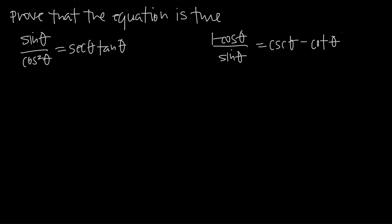In this video, we've been asked to prove that these trigonometric equations are true, and they look pretty messy right now because they are. The point of this is to show that the left-hand side is equal to the right-hand side, and we're going to use what we know about trigonometric functions and their relationships to one another to manipulate these equations.